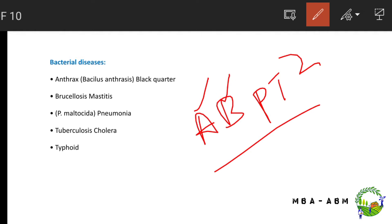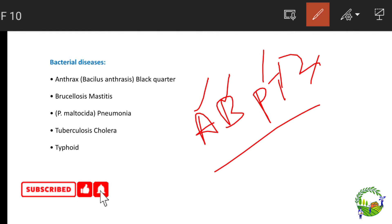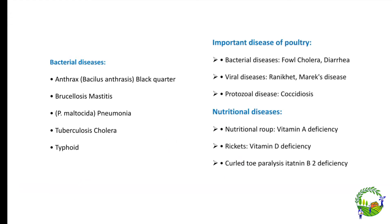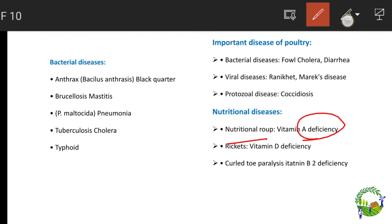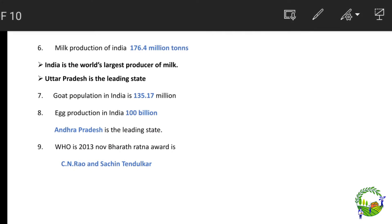For poultry, bacterial diseases include cholera and diarrhea, viral diseases include Newcastle disease (Ranikhet) and Marek's disease, and protozoan disease is coccidiosis. Nutritional diseases: night blindness is caused by vitamin A deficiency, rickets is caused by vitamin D deficiency, and posterior paralysis is caused by vitamin B12 deficiency.